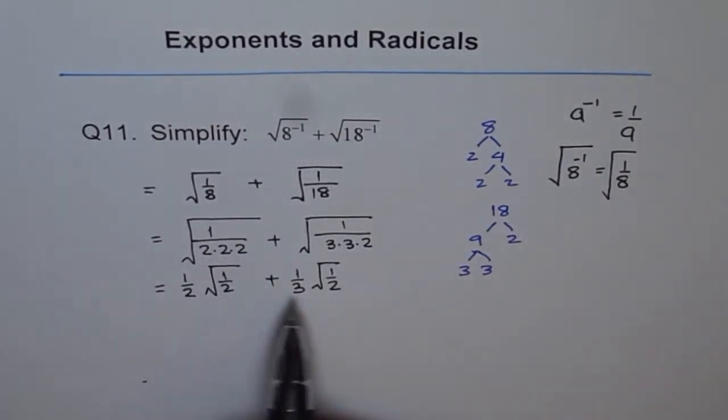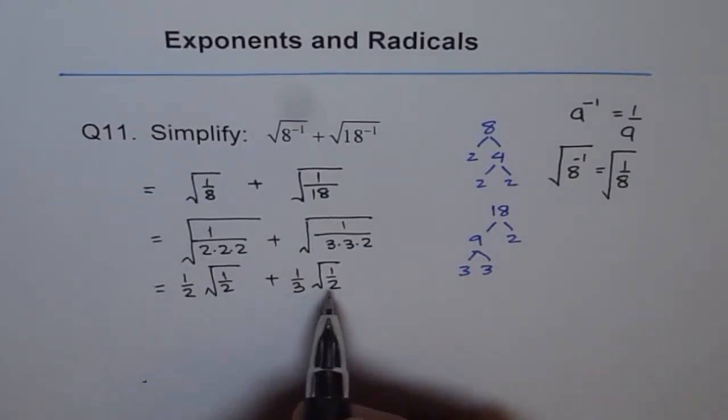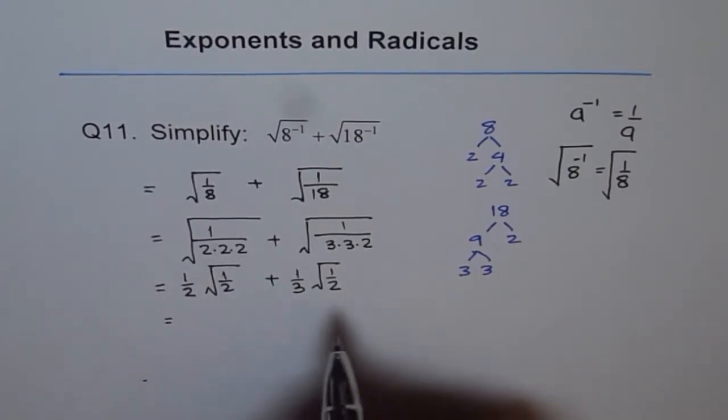That is how it is. Now these are like terms because both have square root of half in them. So we can add half and 1 over 3.